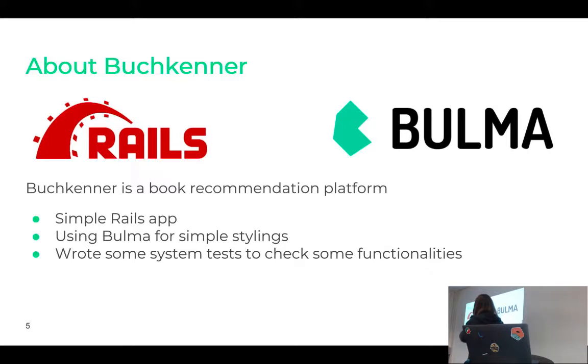A little bit about Buchkenner. It's basically a book recommendation platform. It's very simple, something I wrote in a couple of days. It's a simple Rails app. I'm using Bulma for some styling and I wrote some system tests to check some functionalities. I wrote them expressly badly to demonstrate the point. And sometimes it's exaggerated, of course, but it's always based on stuff I really found in some tests in some projects somewhere in another company, of course. But I mean, this kind of stuff happens, especially when the project becomes complex and you've been working at it for some time. Well, you have code debt also in your tests, and it shows up this way. It's slow tests.